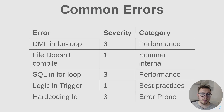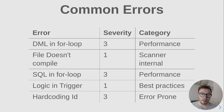Common errors include DML in a for loop, file doesn't compile, SQL in a for loop, logic in trigger, and hardcoding ID. These are things you'd really be worried about if found in your code, whereas some of the styling issues you may not be as concerned about.